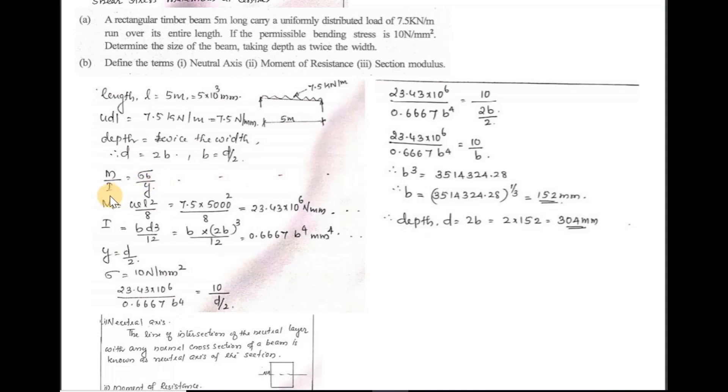We substitute the M value and I value into the bending equation. The bending stress σ is 10 N/mm². Dividing by y — where y = D/2 = B — we express everything in terms of B and solve for B.